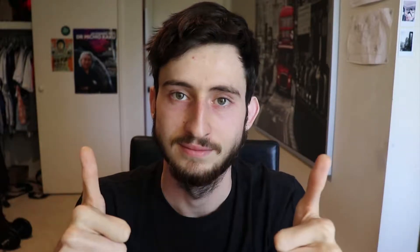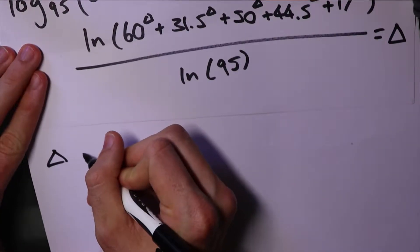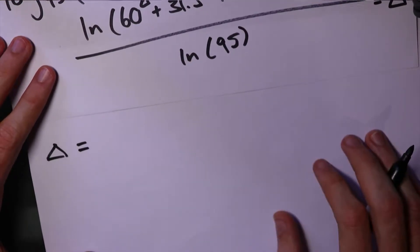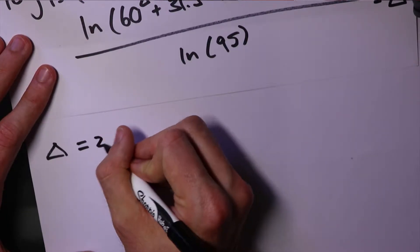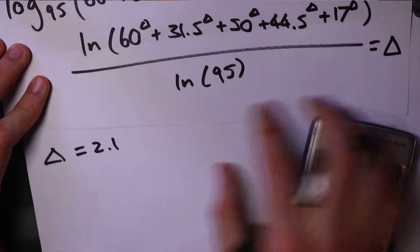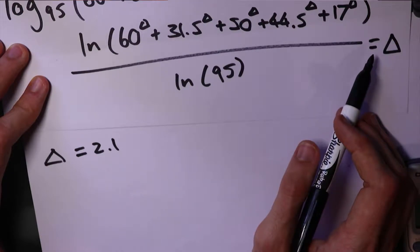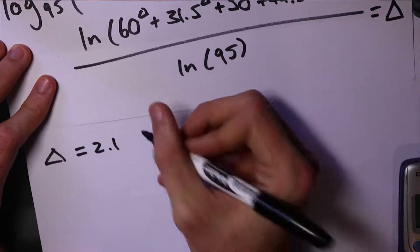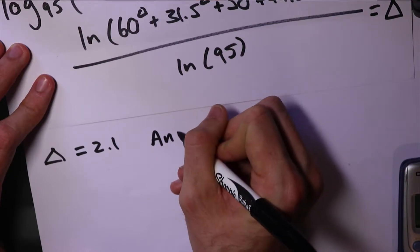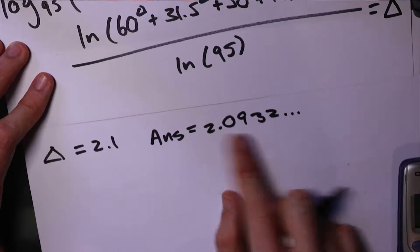So we're now at this point and it's time for step number four. Guess and check. Now, I'm sure there's some eloquent way to figure this out, but I just guessed and checked. So, if I sub in for the triangle, let's just say we sub in 2.1, all right? Pretty close to 2, if I use my calculator, put it into this, I should get 2.1 out if 2.1 is correct. But I don't. My answer is 2.0932, blah, blah, blah, blah, blah. So, it's pretty close, but it's not 2.1.